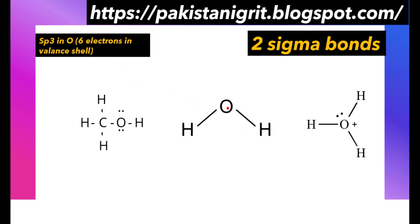Now we will discuss sp3 hybridization in oxygen. Oxygen has one electron more than nitrogen and two electrons more than carbon — it has six electrons in its valence shell. So if an oxygen is forming two sigma bonds, its hybridization will be sp3. We can observe this in an example where oxygen forms one sigma bond with a hydrogen and one sigma bond with a carbon — sp3 hybridization. In water, oxygen also forms two sigma bonds, so hybridization of oxygen in water is sp3.